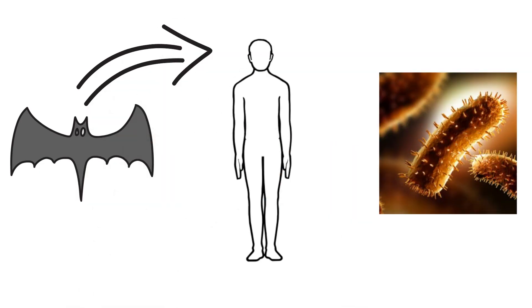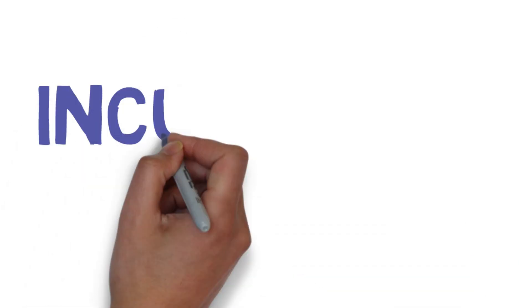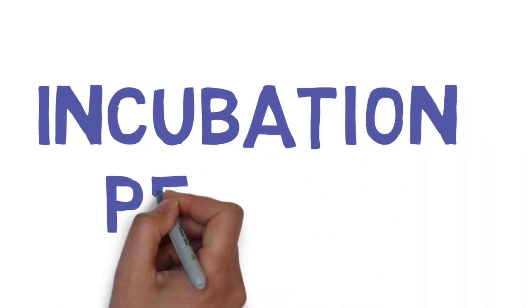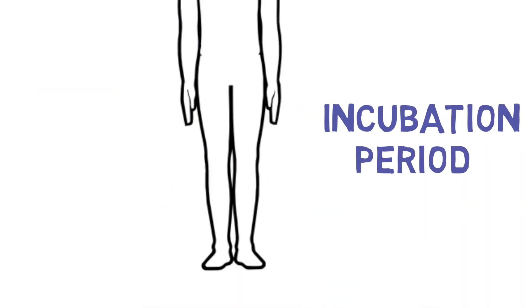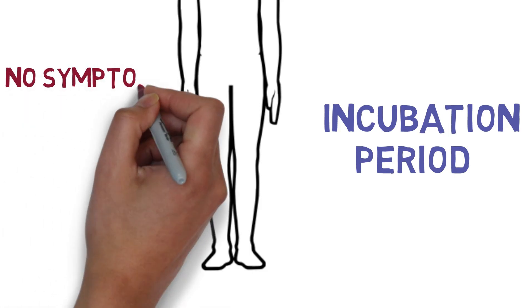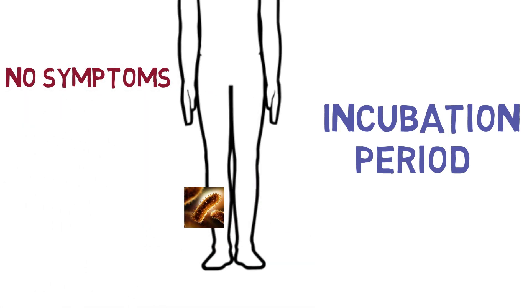The period before the rabies virus spreads to the peripheral nerves is called the incubation period, which may last for weeks. During this phase, no symptoms manifest, since the virus is localized to the site of injury.